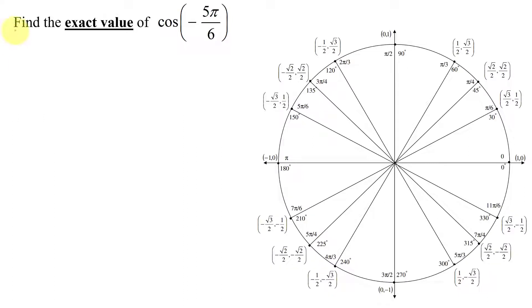In this example, I need to find the exact value of the cosine of negative 5π divided by 6. Notice it says exact value, so that means don't use your calculator as it will give you an approximate solution. I need to use the unit circle shown over here.